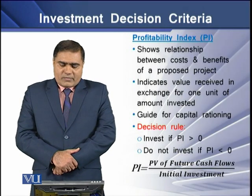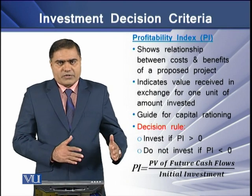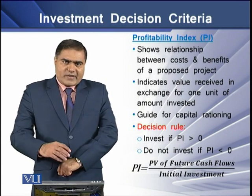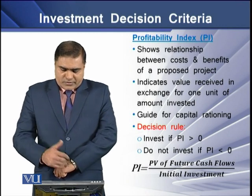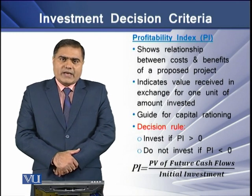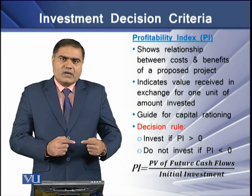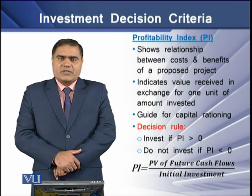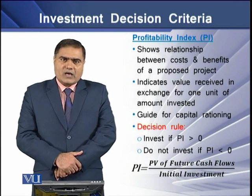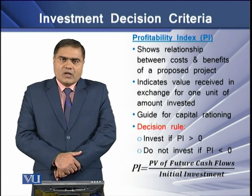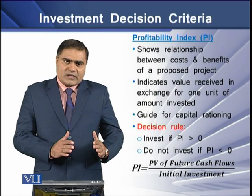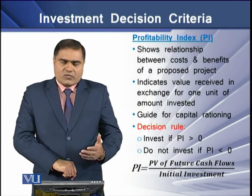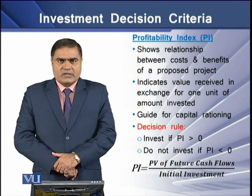Profitability index shows the relationship between cost and benefit of a proposed project. It is determined by dividing the present value of cash inflows over the present value of cash outflows, and it tells how much has been recovered against an investment of a single unit of currency. For governmental and non-profit organizations, this is also known as the benefit-cost ratio. It is an important tool for guiding financial analysts in capital rationing. The decision rule is: if the profitability index is greater than 1, accept the project; if it is lesser than 1, reject the project.